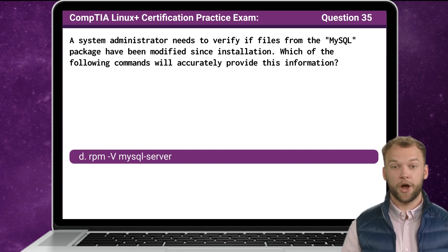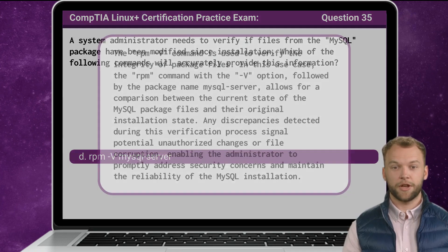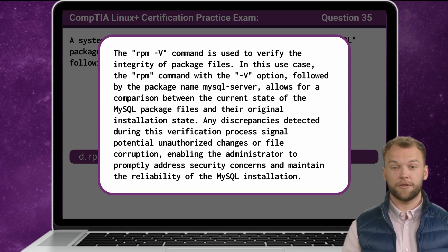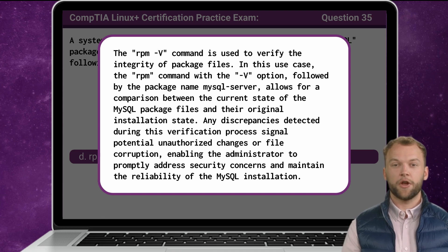The answer is D: RPM -V mysql-server. The RPM -V command is used to verify the integrity of package files. The RPM command with the -V option, followed by the package name mysql-server, allows for a comparison between the current state of the MySQL package files and their original installation state. Any discrepancies detected during this verification process signal potential unauthorized changes or file corruption, enabling the administrator to promptly address security concerns and maintain the reliability of the MySQL installation.